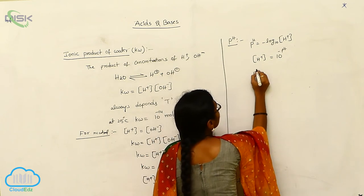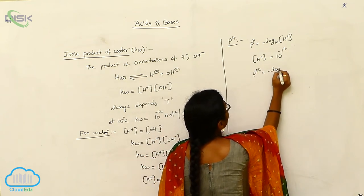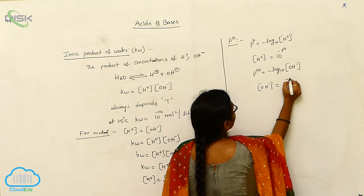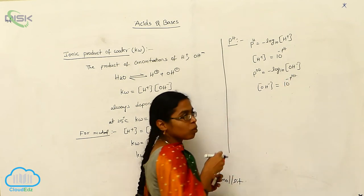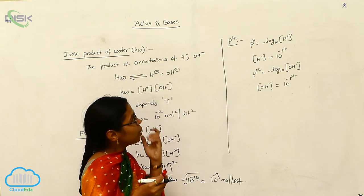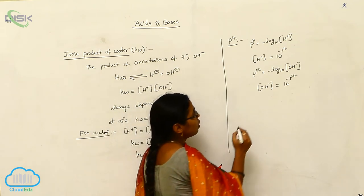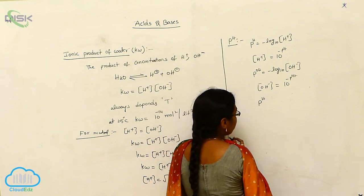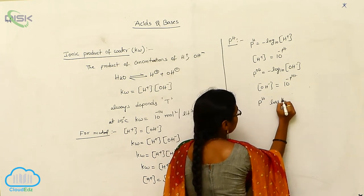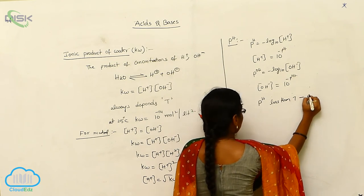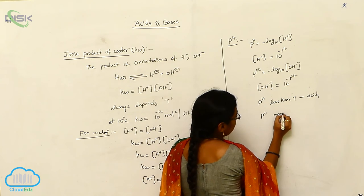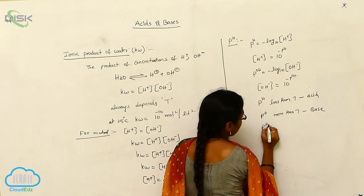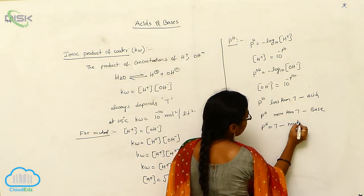pOH is defined as −log₁₀[OH⁻], so [OH⁻] = 10⁻ᵖᴼᴴ. Based on pH: when the pH value is less than 7, the solution is acidic. When pH is more than 7, the solution is basic.